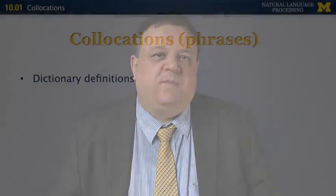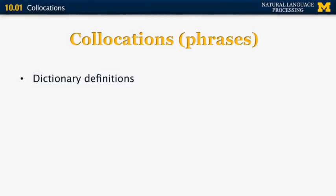Welcome back to Natural Language Processing. The next segment is going to be about extracting collocations from text. Collocations are phrases that have dictionary definitions of their own, and those definitions are different from the meaning of the individual words.